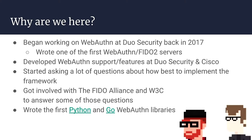During this development lifecycle, we started to ask a lot of questions about how to best implement the framework, not just at our own company but elsewhere. There's not a lot of decisions made in 2017 around user experience and user interfaces, and what a real story flow would look like for users using WebAuthn. We got involved with the FIDO Alliance and the W3C, the two standards bodies that are stewards of FIDO2 and the WebAuthn standard, to get answers. We helped write a lot of those answers as a community, and also helped develop two of the first Python and Go WebAuthn libraries available.